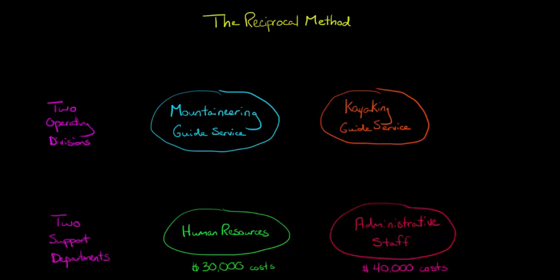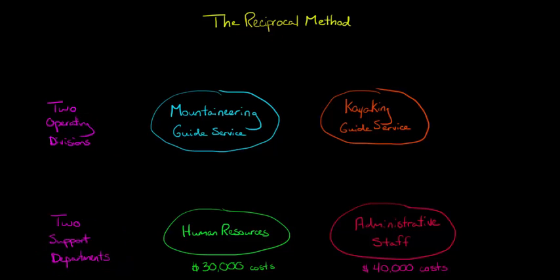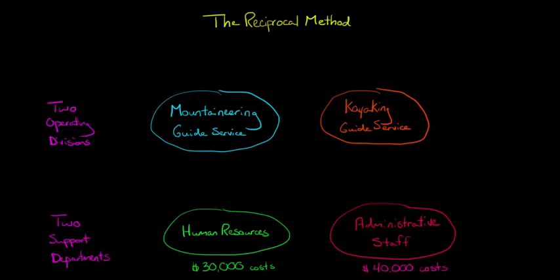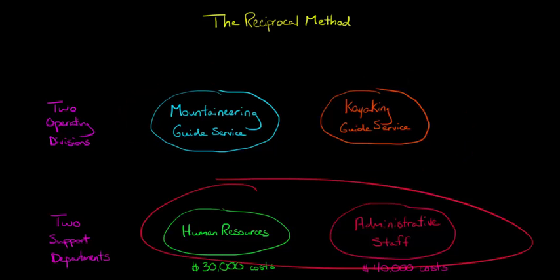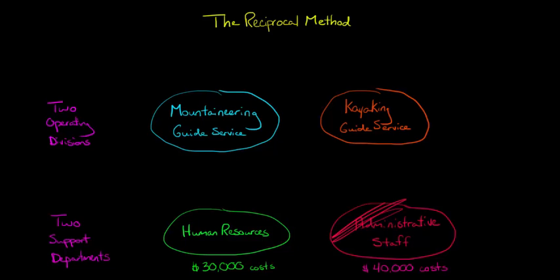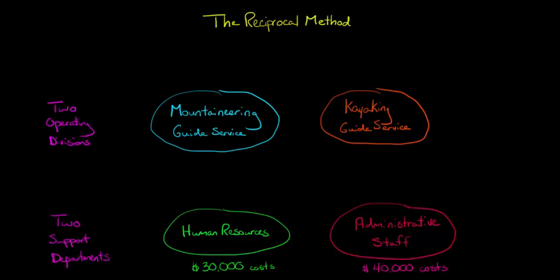In this video, we're going to talk about how to allocate the costs of multiple support departments by using the reciprocal method. We have an adventure company with two operating divisions: mountaineering guiding and kayak trip guiding. We also have two support divisions — an HR department and an administrative staff department — and we want to allocate the costs of these support departments to the operating divisions.